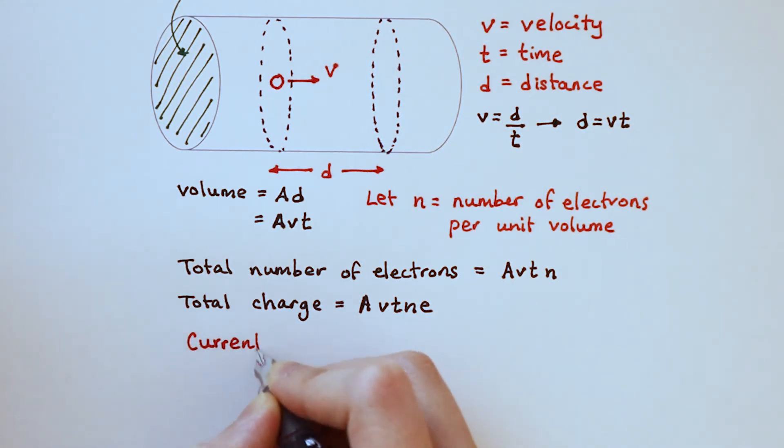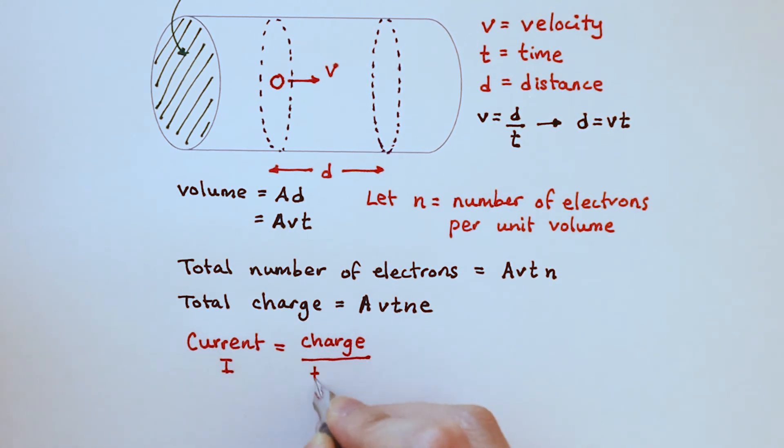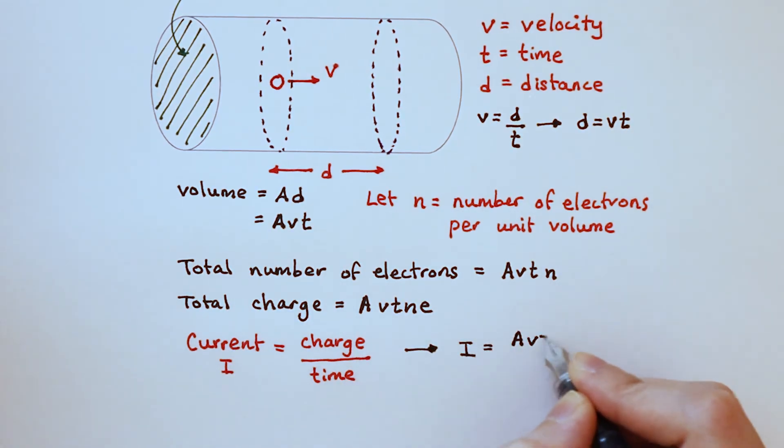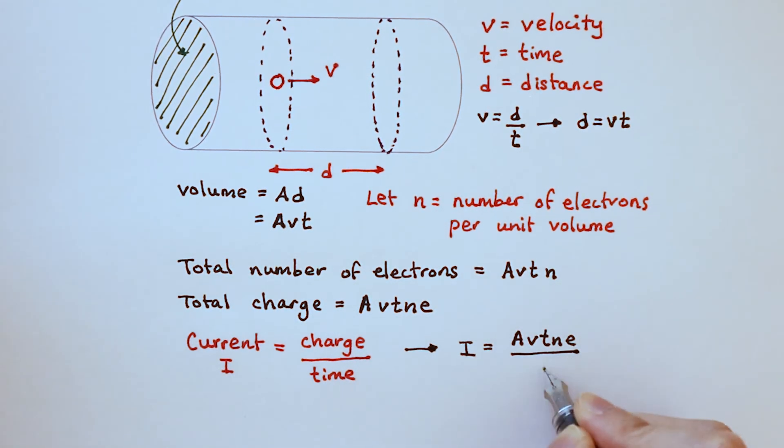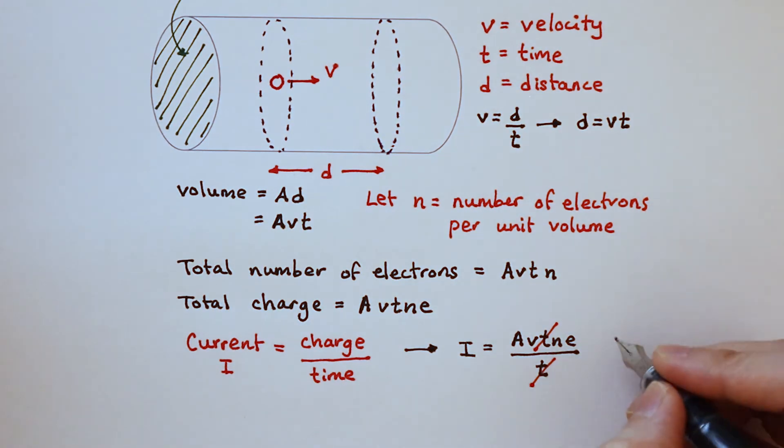Current is the total amount of charge passing through a point in a unit of time. So current I is Avtne divided by time. Cancel the t's. We finally arrive at the equation I is equal to Avne.